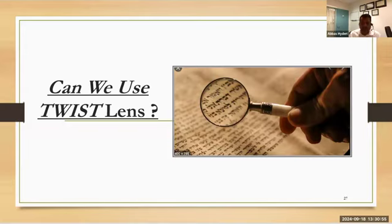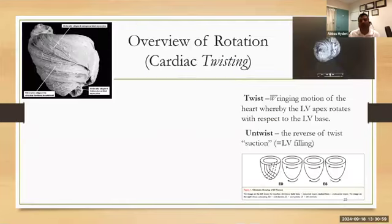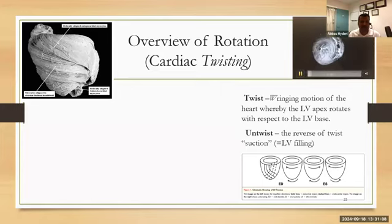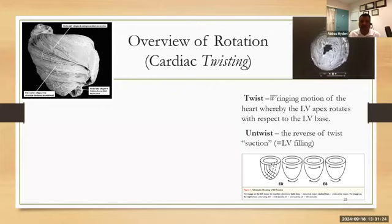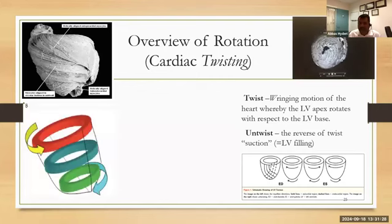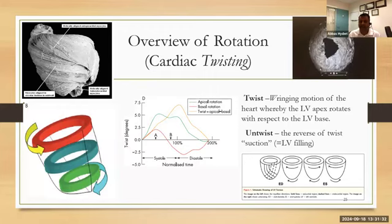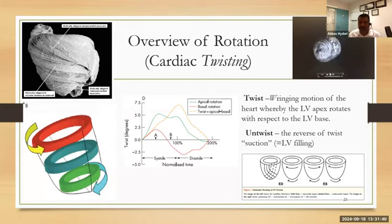We started to think we should increase the sensitivity of our tools, so we went to twist mechanics. Twist, as the name suggests, is just a twisting of the heart. The heart has helical fibers arranged in left-hand and right-hand axes, and when they twist at the apex and base, we can calculate the twist, its speed, its peak, and many variations. Twisting relates to systole and untwisting relates to diastole. One problem of this technology is there is no common yardstick — each software has a different methodology and its own normative data.